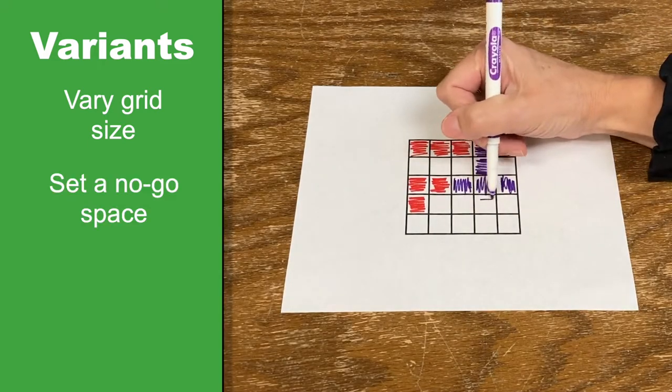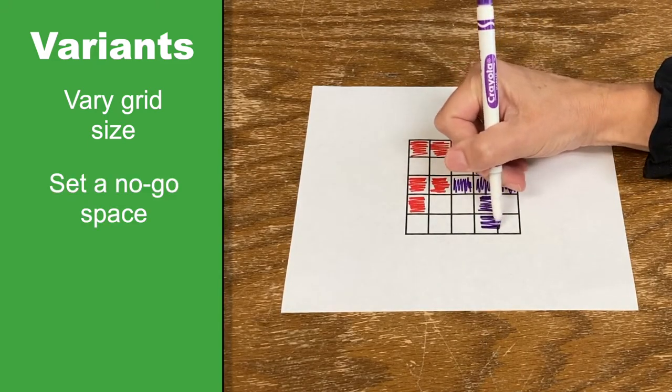Before starting, draw a star in one of the squares. You can't use the space with the star.